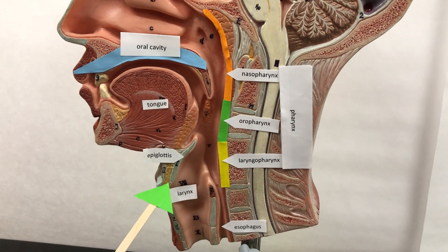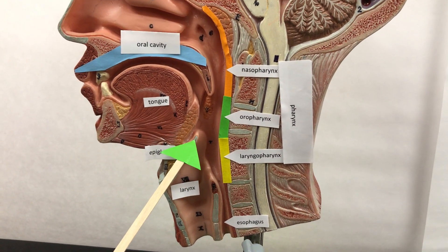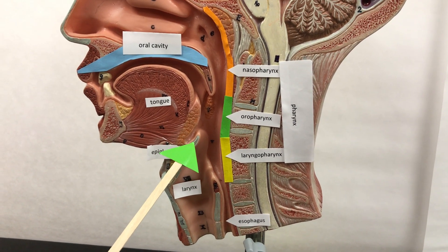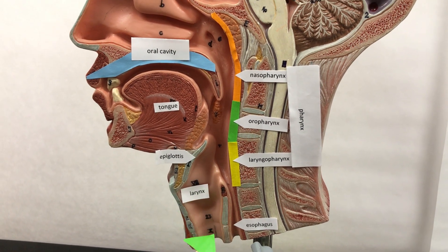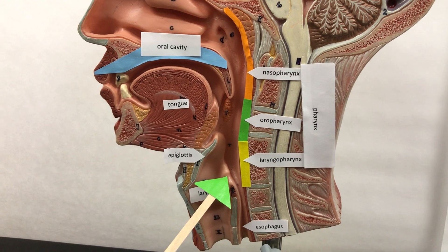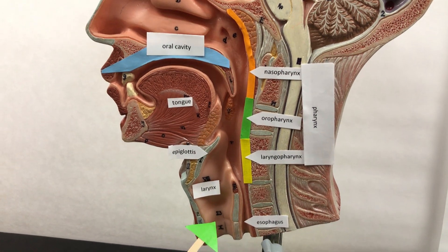Right here we have the epiglottis. The epiglottis is very important because it's a cartilaginous flap and it covers the trachea when you swallow so that you won't get food or liquid into the lungs.